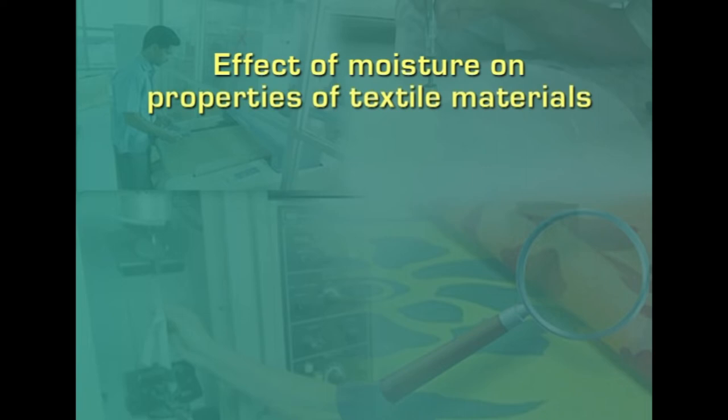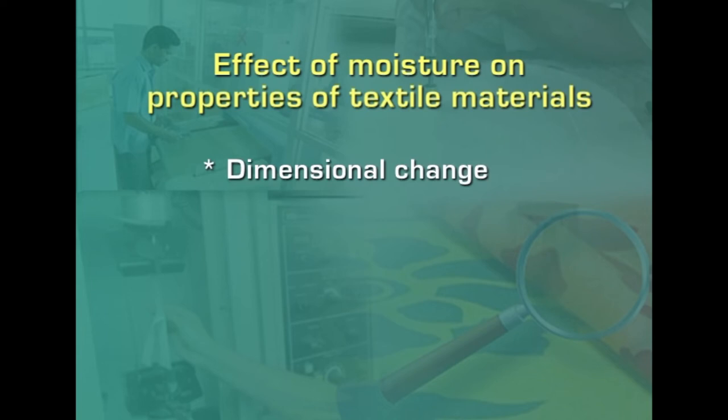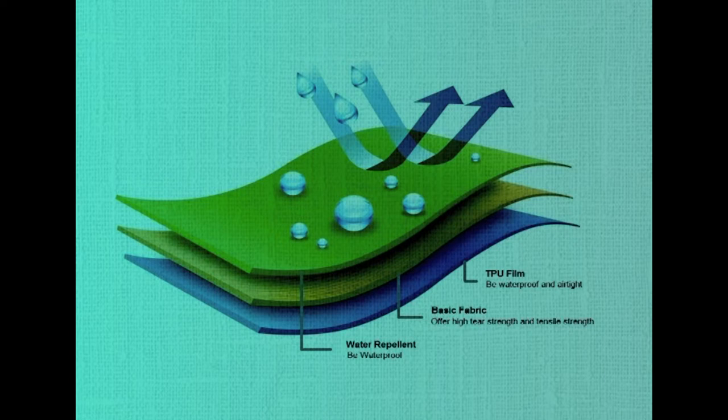Almost all physical properties are affected by moisture. First, there is a dimensional change: as moisture is absorbed into the amorphous region, swelling takes place and increases with moisture. This swelling changes the width, shape, and size of the fabric, and also affects stiffness and permeability of yarns and fabric. This swelling property is actually advantageous in producing waterproof fabric, as fibers swell to cover the area making the fabric waterproof.